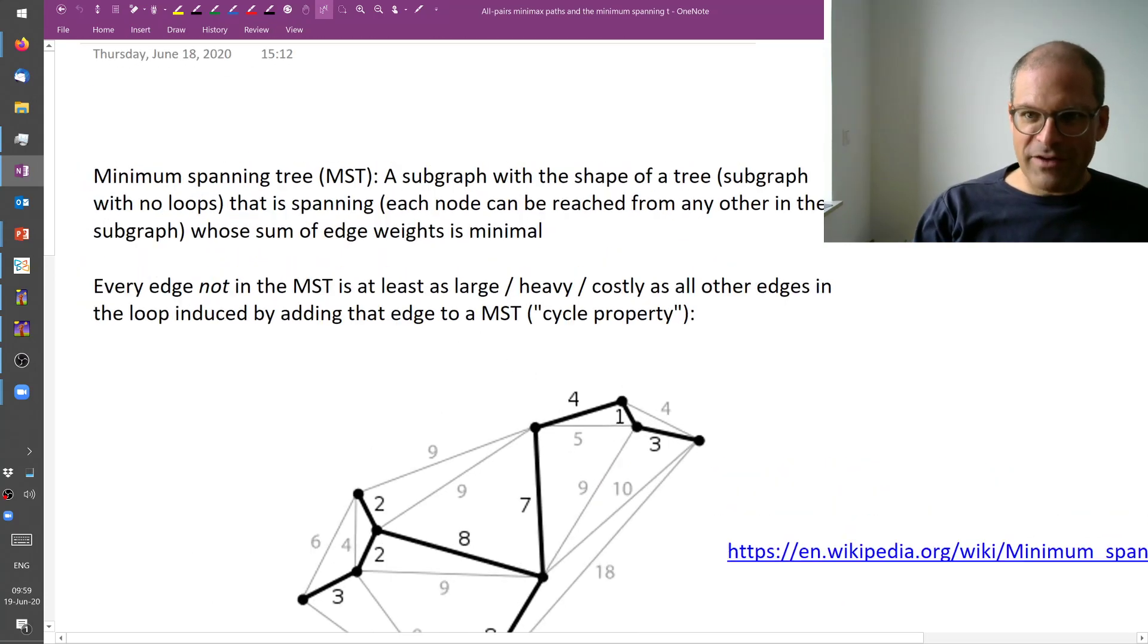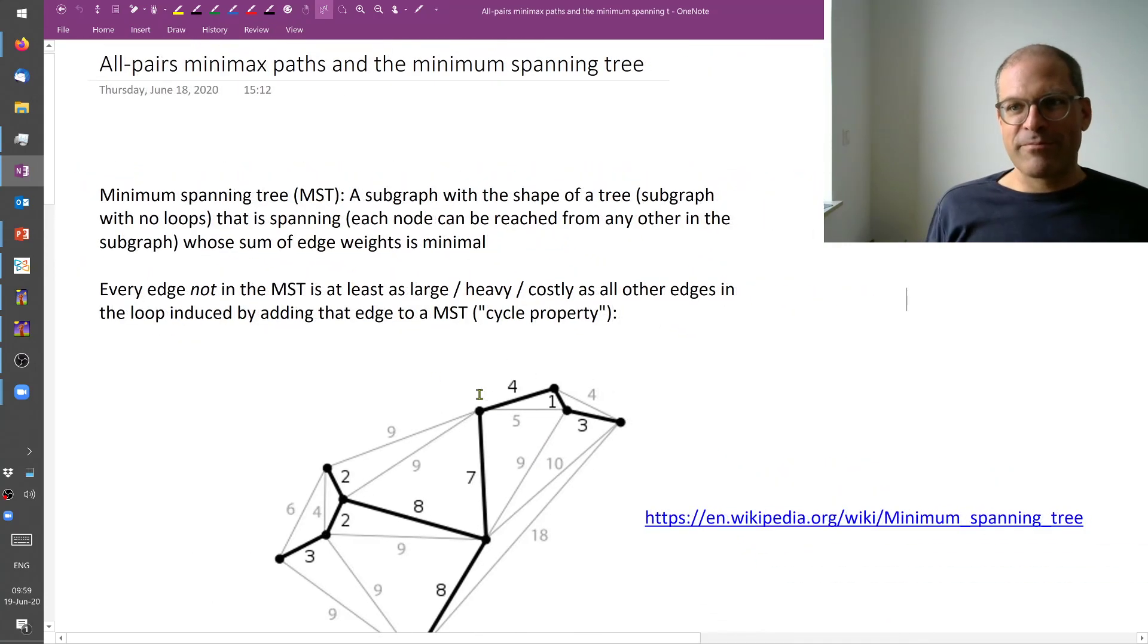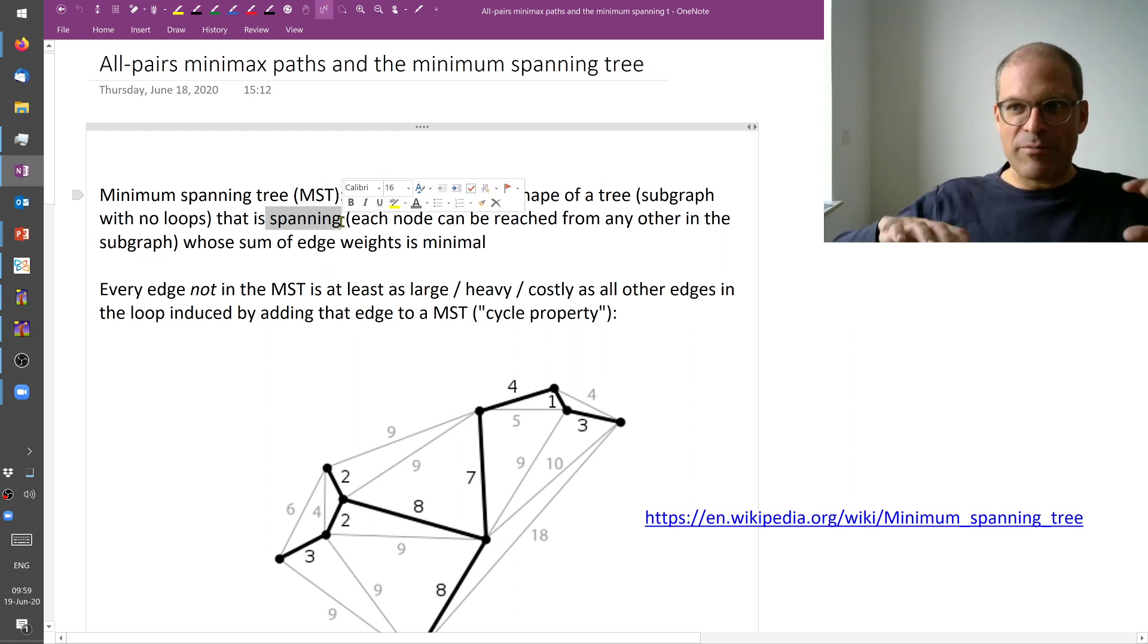So what is a minimum spanning tree? If we have some graph then we're looking for a subgraph. The subgraph should be spanning. That means, basically the subgraph encompasses all nodes such that I can walk from one node to any other without leaving this subgraph.